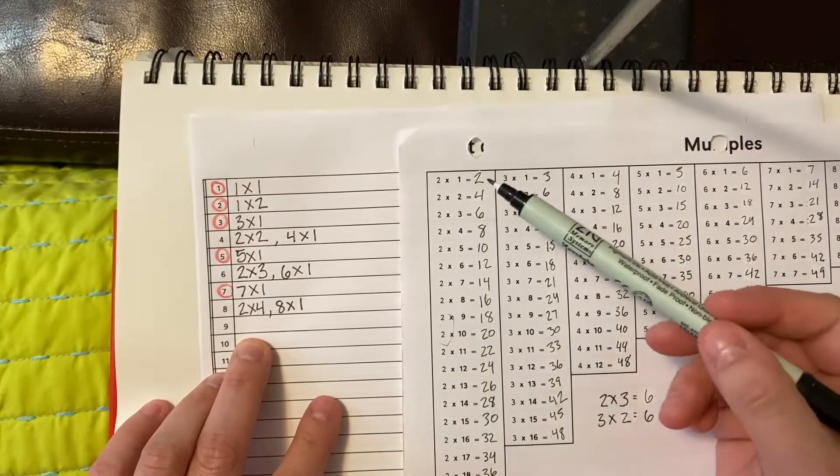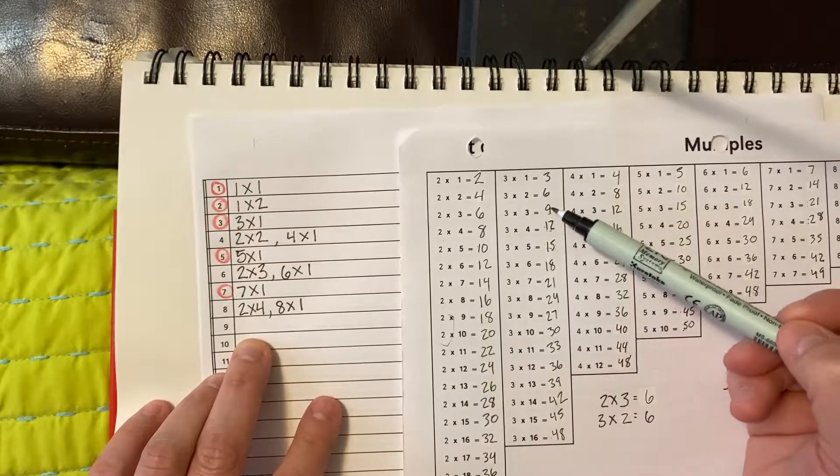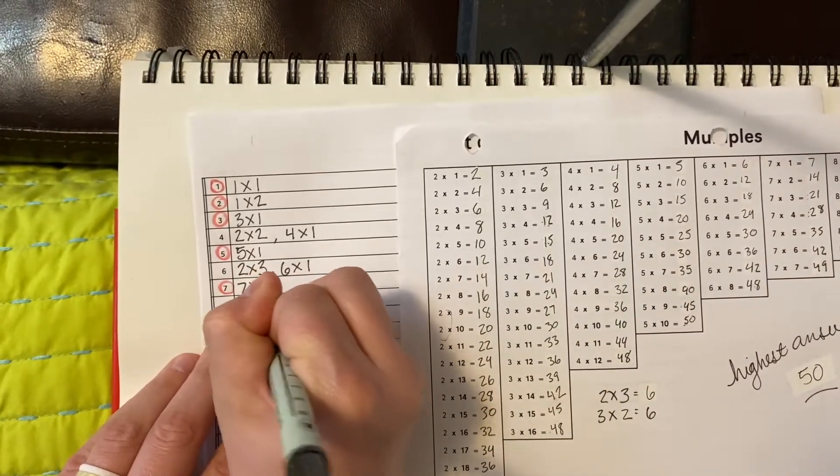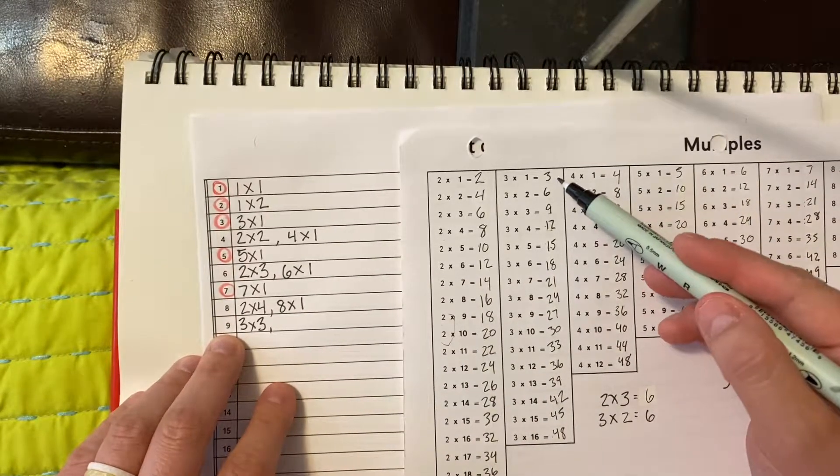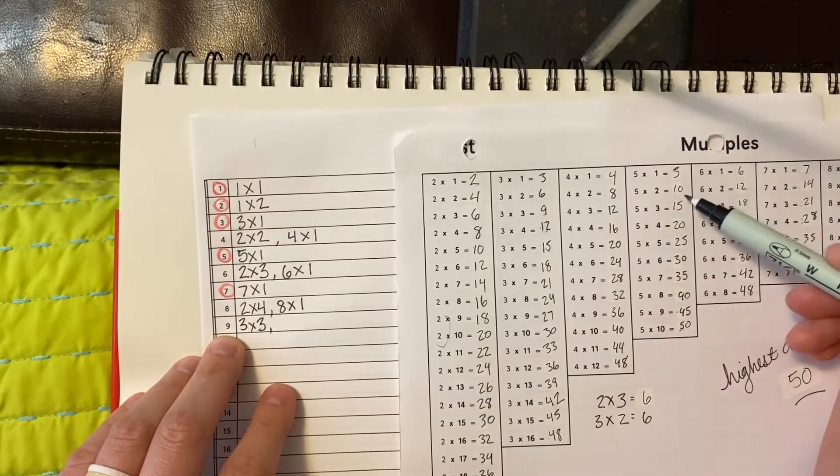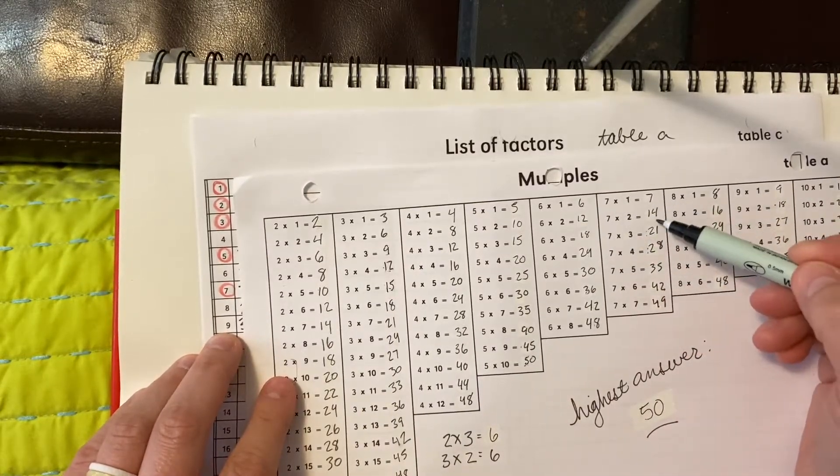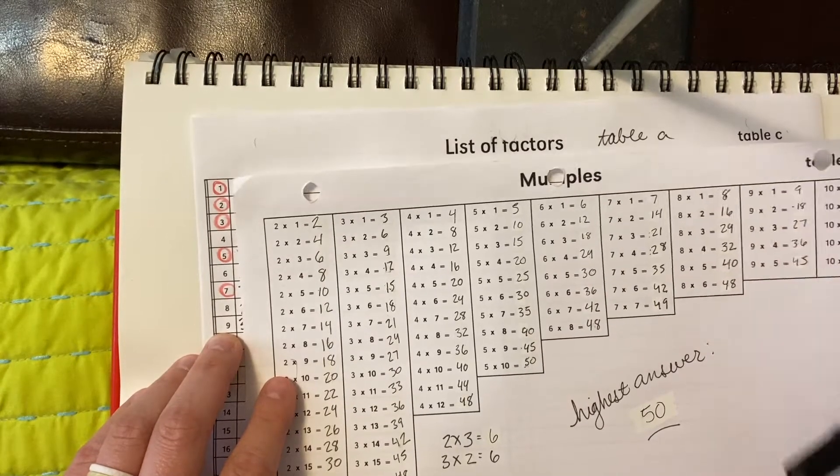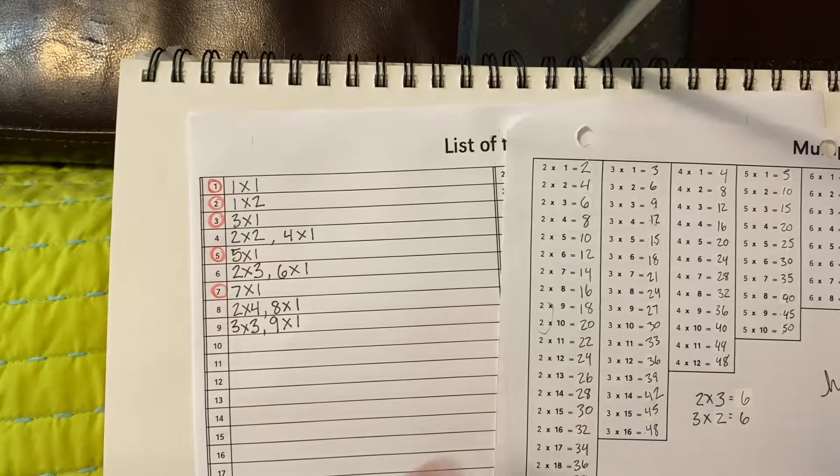Now let's check out 9. 2, 4, 6, 8, 10 - 9 would be here. 3, 6, 9 - oh, there's one: 3 times 3. 4, 8, 12 - 9 would be there. 5, 10 - that would be there. 6, 12 - no. 7, 14 - no. 8, 16 - no. 9 - here we go: 9 times 1 equals 9. So there's more than one way there. I'm not going to circle it.